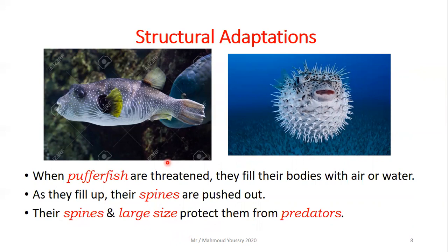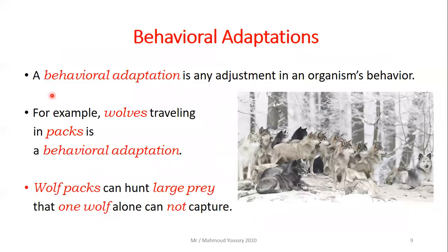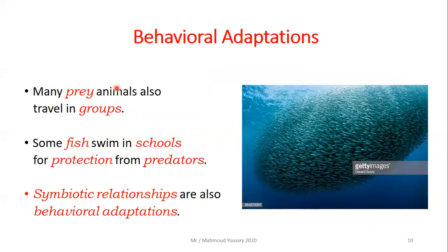Then we move to the second type of adaptation, which is behavioral adaptations. A behavioral adaptation is any adjustment in an organism's behavior. Wolves traveling in packs is a behavioral adaptation - wolf packs can hunt large prey that one wolf alone cannot capture. Also many prey animals travel in groups. Some fish swim in schools for protection from predators. Symbiotic relationships are also behavioral adaptations.